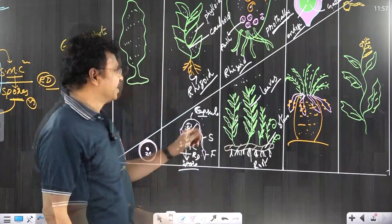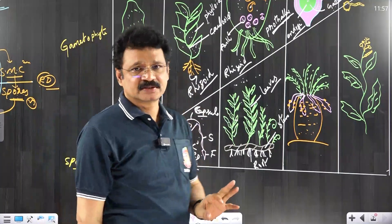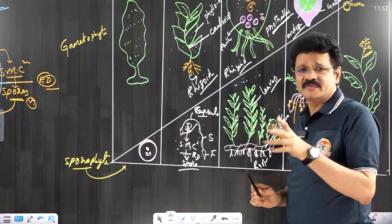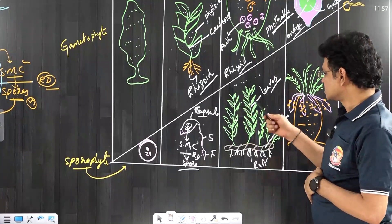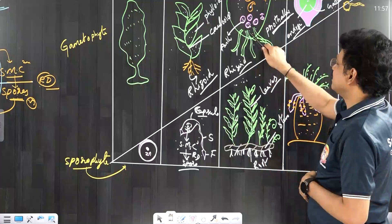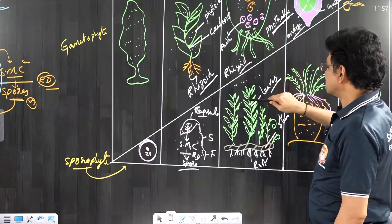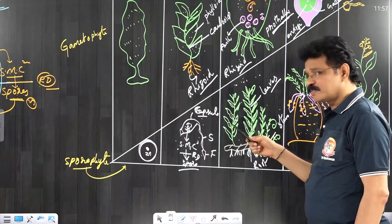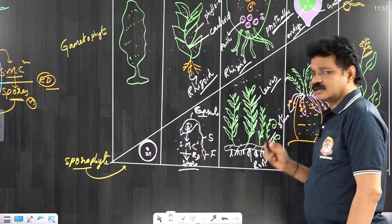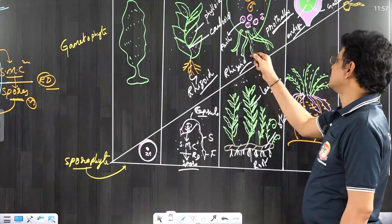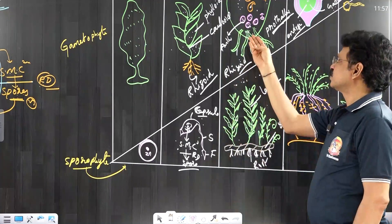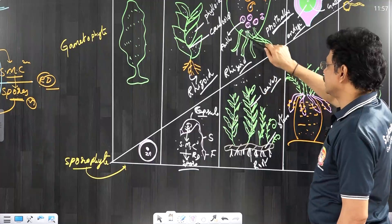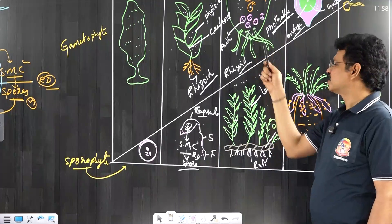One important distinction: independent phase does not mean dominant phase. Every dominant phase is independent, but all independent phases may not be dominant. In pteridophytes, the sporophyte is independent and dominant, but the gametophyte is independent but not dominant. The sporophyte is dominant because it is well adapted to terrestrial habitat due to vascular tissues, has a very high lifespan, and is larger in size. The gametophyte has a very short lifespan of only a few weeks — that's why it is not dominant. But both are independent.